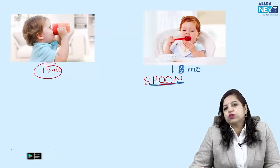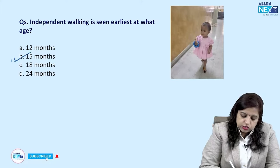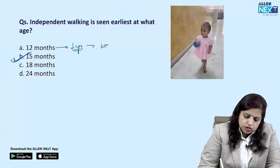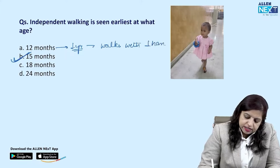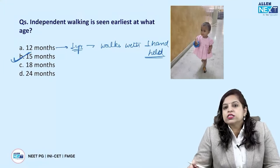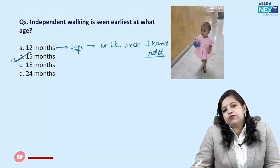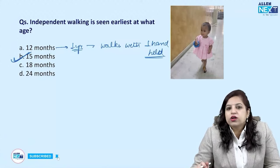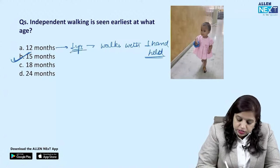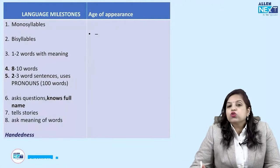Independent walking is seen earliest at 15 months. At 12 months — one year — the child walks with one hand held. Remember the story: on the child's first birthday, the mother holds one hand and takes the child to the table where the cake is set. So at one year, the child walks with one hand held; independent walking comes at 15 months.